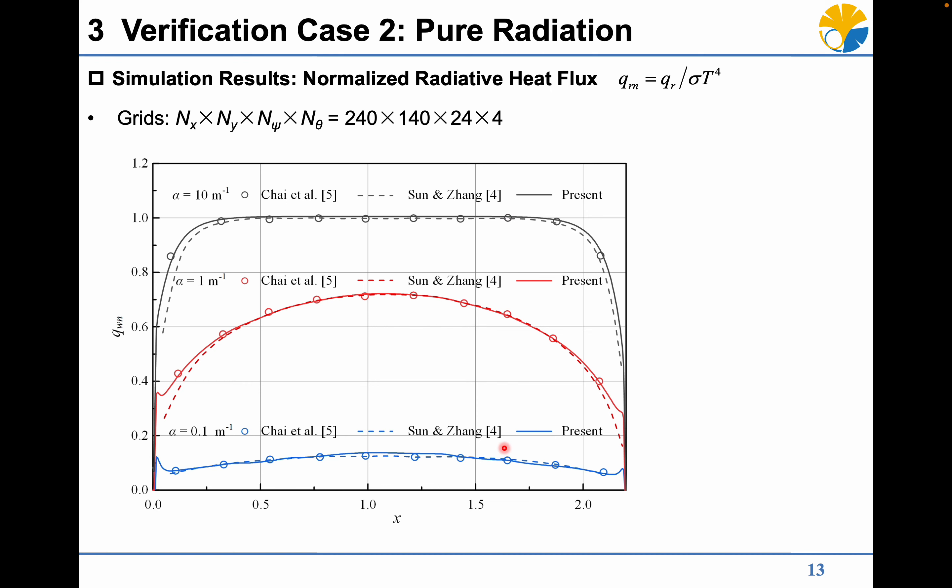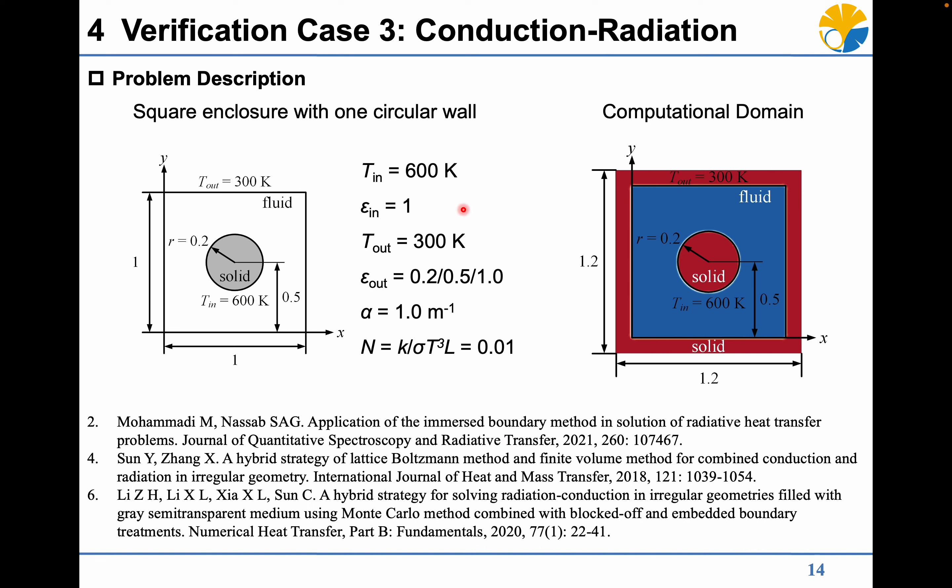Another more complicated case of combined conduction and radiation problem is investigated. The temperature of the inner circular wall is 600K and the temperature of the outer square wall is 300K.